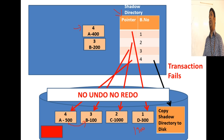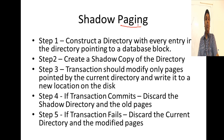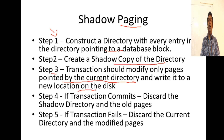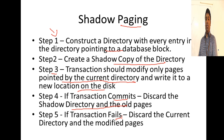To summarize the steps of shadow paging: Step 1 - construct a directory with every entry pointing to a database block. Step 2 - create a shadow copy of the directory. Step 3 - the transaction modifies only pages pointed to by the current directory and writes them to a new location on disk. If the transaction commits, discard the shadow directory and deallocate the old pages. If the transaction fails, discard the current directory and reinstate the shadow copy. This is shadow paging.